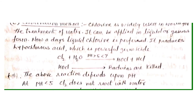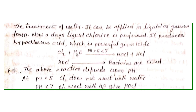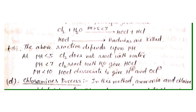The next method is the chlorination method. In this method, chlorine is widely used for the treatment of water. Nowadays, liquid or gaseous chlorine is preferred. It produces hypochlorous acid, which is a powerful germicide and will kill all the bacteria and microorganisms. Chlorine reacts with water at a pH range of five to seven to produce HOCl plus HCl. This hypochlorous acid then decomposes to make HCl plus nascent oxygen [O], which kills all the bacteria, similar to the bleaching powder method.